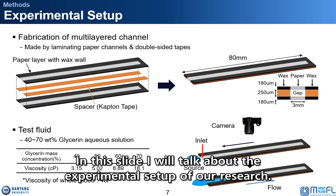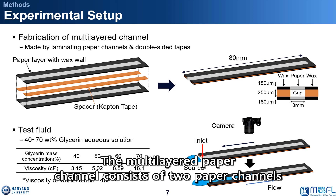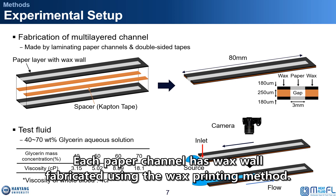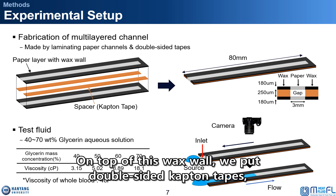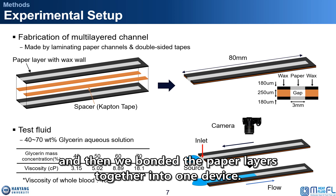In this slide, I will talk about the experimental setup of our research. The fabrication method of the multi-layered paper channel is as follows. The multi-layered paper channel consists of two paper flow channels and one gap as shown in the figure. Each paper channel has wax walls fabricated using the wax printing method. On top of these wax walls, we put double-sided tape, which is used as a spacer, and then we bonded the paper layers together into one device.